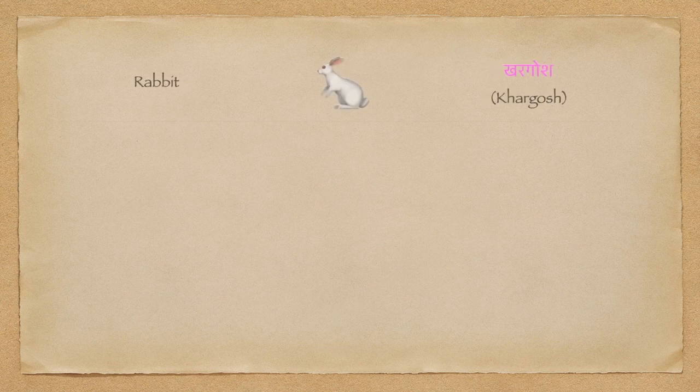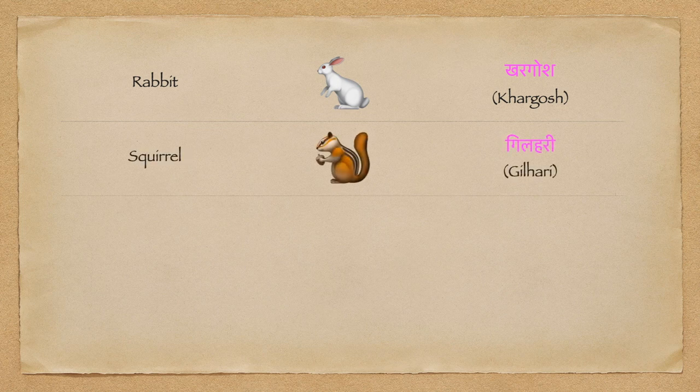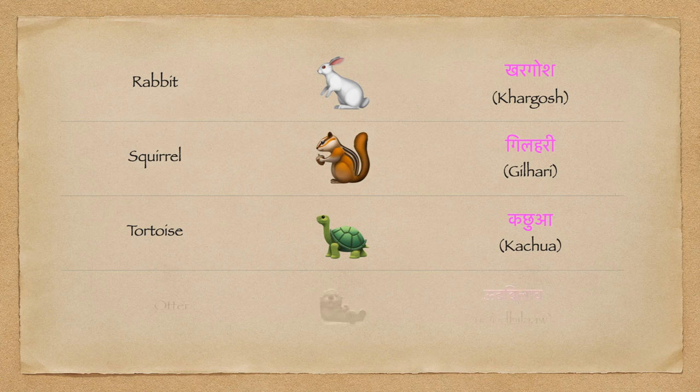Rabbit is Khargosh. Squirrel is Gilaheri. Tortoise is Kachua. And finally, otter is Oodbilao.